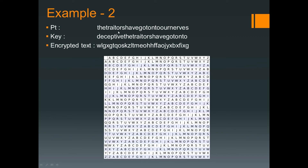In the next example, the plain text is 'the traitors have gone onto our nerves'. The first character is 't' and the first key character is 'd'. Find 't' row-wise — t is here — and find 'd' column-wise — d is here. The intersection element is 'w', so the first letter of the encrypted text is 'w'. For the last character, the plain text gives 's' and the key string gives 'o'. Find 's' row-wise — s is here — and find 'o' column-wise — o is here. The intersection gives 'g', so the last character of the encrypted text is 'g'. The remaining characters follow the same process.